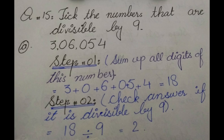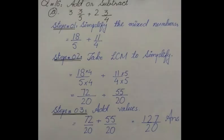Question 16: Add or subtract. The question is 3 whole 3/5 plus 2 whole 3/4. Whenever we have mixed values, we simplify them. How? Multiply 5 by 3 to get 15, add 3 to get 18, so we have 18/5.